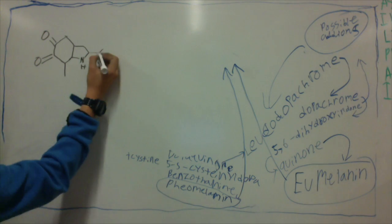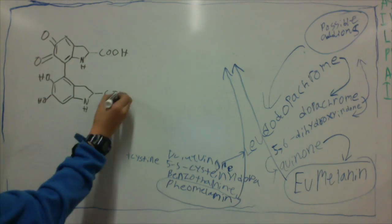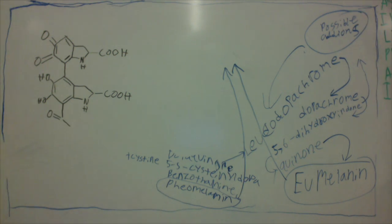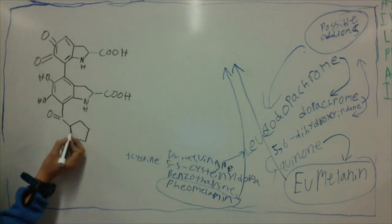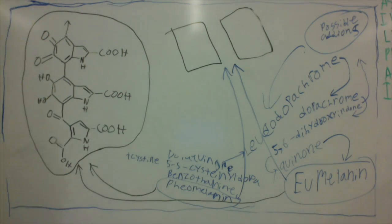Here I am drawing the basic structure for all three of these melanin compounds. Melanin is a polymer, which means that it's lots of the same things strung together in a long line, and this is a single one of those units.